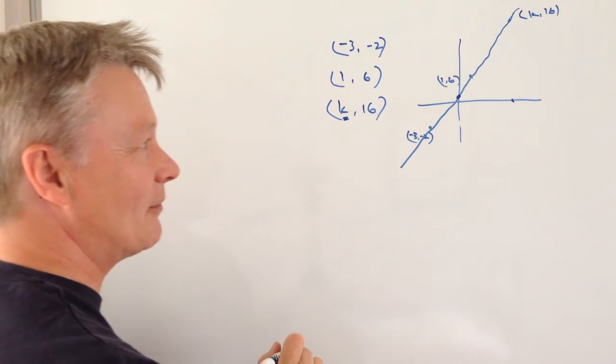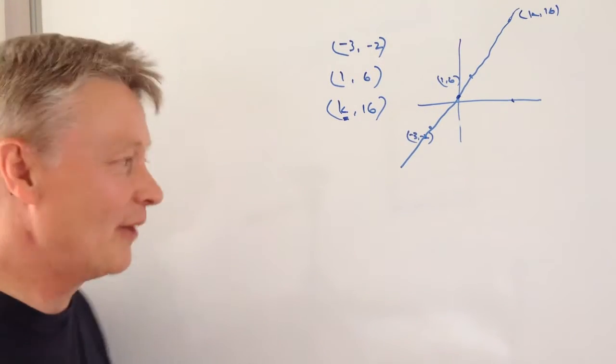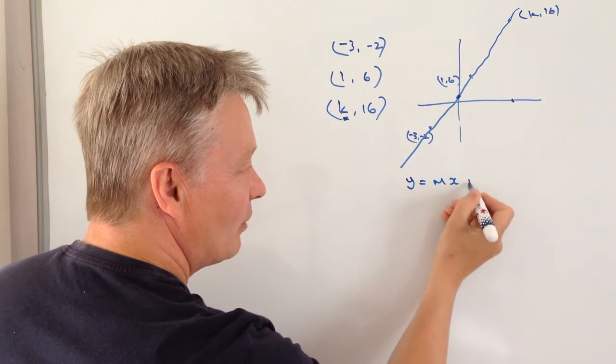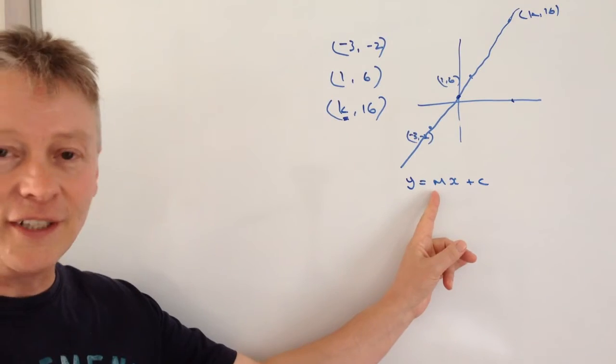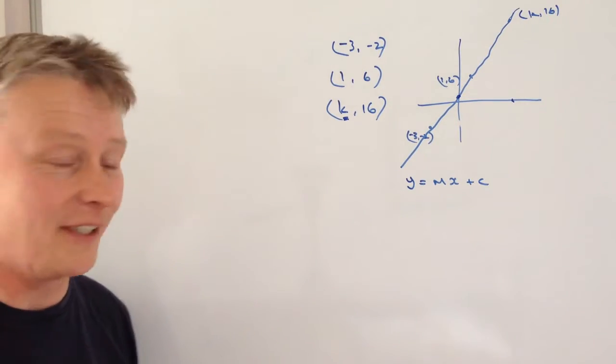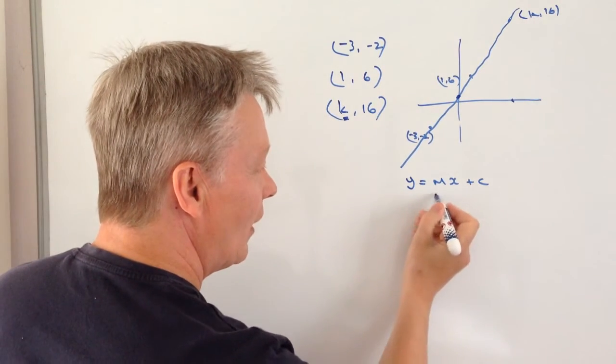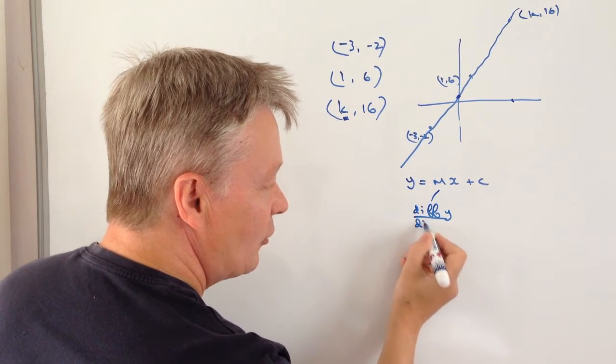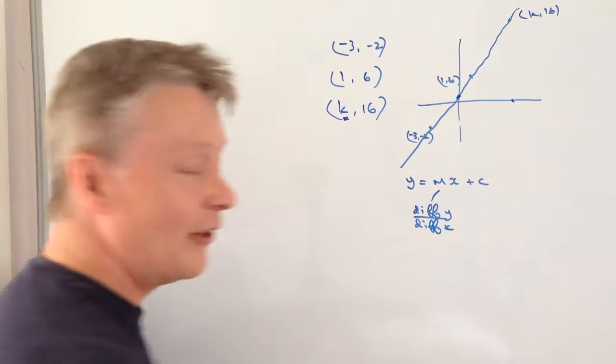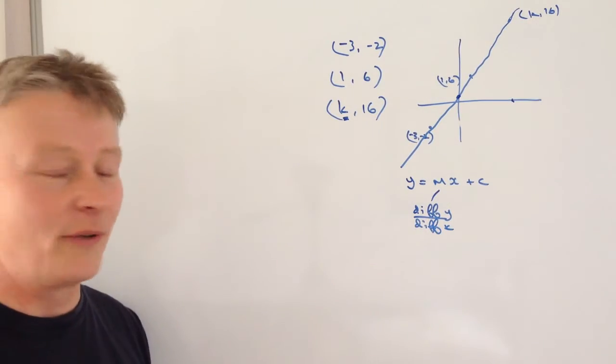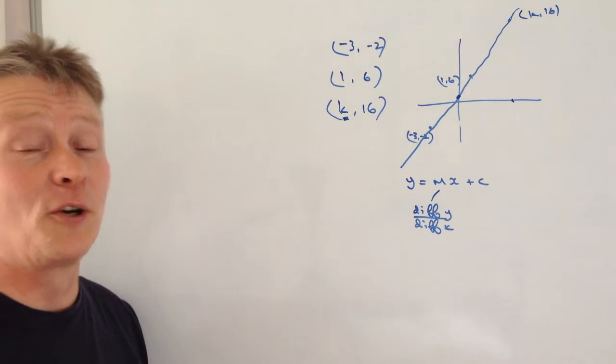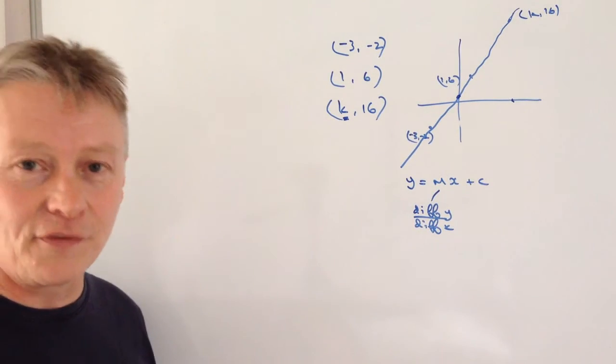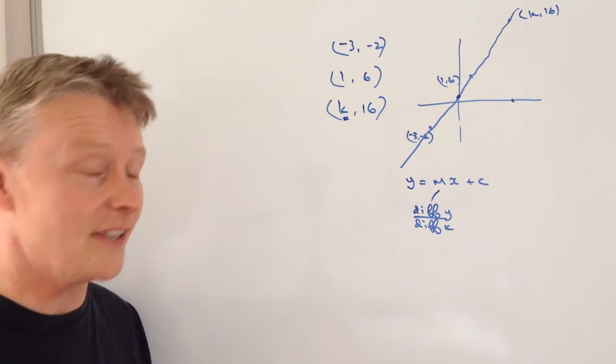The first thing I'm going to do is write out the general form of a graph, which is Y = MX + C. The value of M is the gradient, which is the difference in Y divided by the difference in X. The same gradient is true for all points on the graph, but they've given us two points we know quite a lot about, so we're going to use that information to find the gradient.